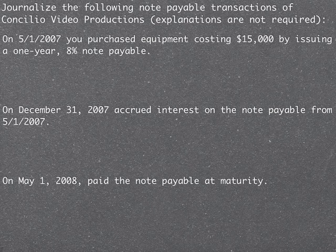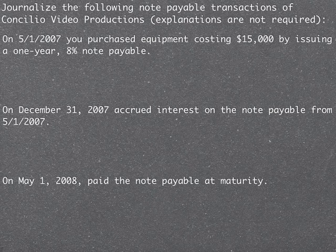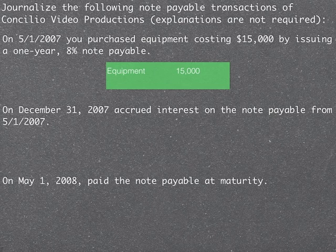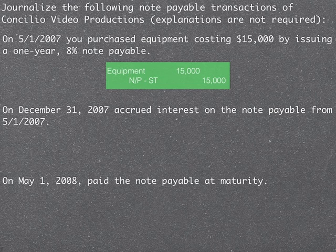One thing to note about this first entry: we are only recording the purchase of the equipment. The details about the eight percent note payable and the one-year term don't come into play in this particular entry, but they are important later on. To record the purchase of the equipment, we're going to debit Equipment for fifteen thousand dollars. Since we're not paying cash — we're issuing a note — we credit Notes Payable Short-Term for fifteen thousand dollars.